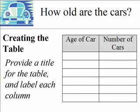When it's time to create your table, you're going to want to make sure that you label your columns. Notice that the leftmost column is labeled age of car — this is where we put the survey responses: one year, two year, and so on. The rightmost column is labeled number of cars in each class interval. And your table should also have a title — in this case, 'How old are the cars?'